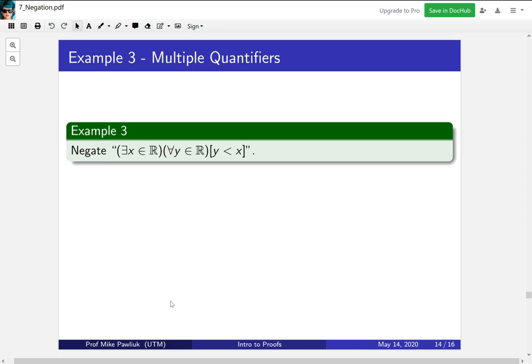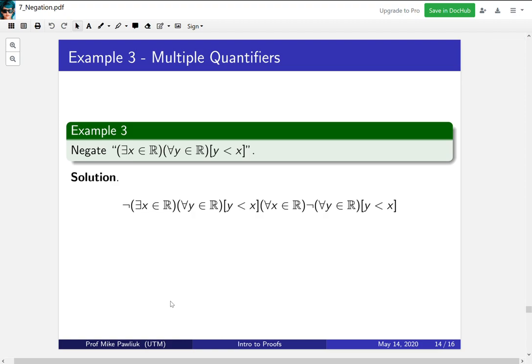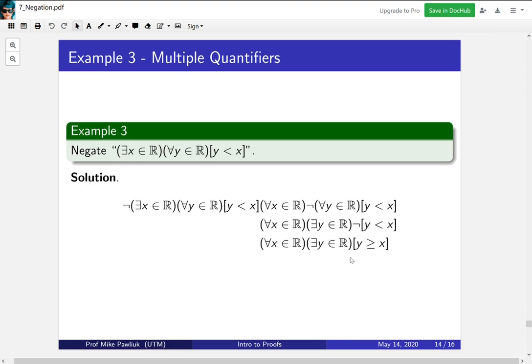Let's look at a third example. This one involves multiple quantifiers. Take a moment to negate this statement. Work slowly, one step at a time, pull the negation through one piece at a time. So I started with the negation of the statement with the negation symbol outside. Then I pulled the negation in one step. Then I pulled the negation in one more step. The for all becomes that there exists. And then we negate this part. Y is less than x. The negation is y is greater or equal to x. So all of these are logically equivalent. And the way we did it was by pulling the negation symbol through one step at a time.